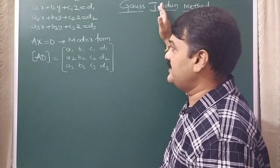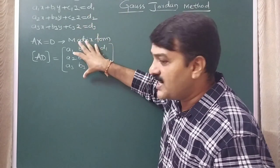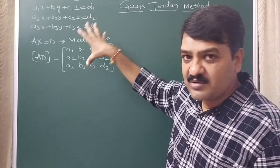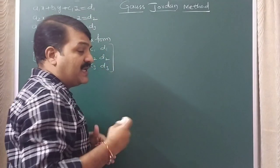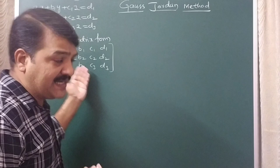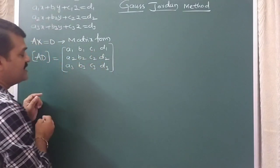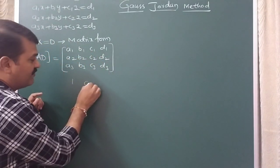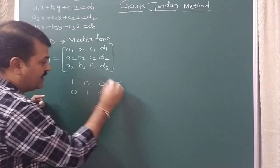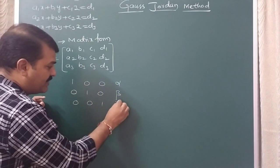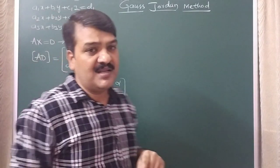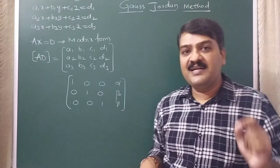In the Gauss-Jordan method, we start by taking the augmented matrix. We apply elementary row transformations to transform this matrix into the form: row 1 = [1, 0, 0 | α], row 2 = [0, 1, 0 | β], row 3 = [0, 0, 1 | γ]. We must transform the augmented matrix into this model using elementary row transformations.